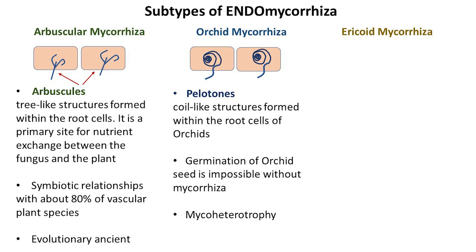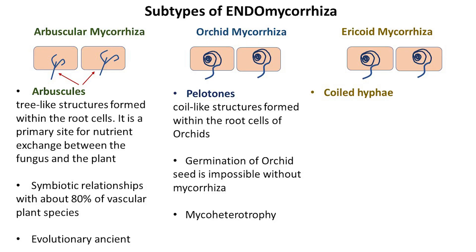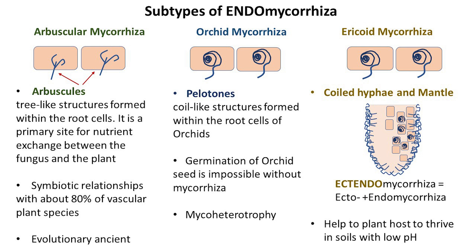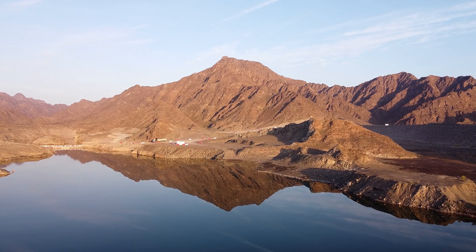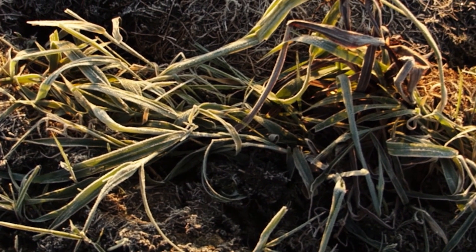As is obvious from the name, ericoid mycorrhiza is an association between mycorrhizal fungi and ericoid plants. Economically important plants in this family include blueberry, bilberry, cranberry, and rhododendron. Fungal hyphae penetrate root cells of ericoid plants and get a coiled conformation. Additionally, hyphae envelop the plant root forming a mantle, as in the case of ectomycorrhizal interaction. This combination of features of both ecto- and endomycorrhiza is called ectendomycorrhiza. One of the remarkable features of ericoid mycorrhizal fungi is their ability to thrive in acidic soils. Consequently, this association is crucial for plant survival in soils with low pH. These associations are commonly found in environments like heathlands and peat bogs, where nutrient availability is limited. The fungi aid the host plant in nutrient uptake, contributing to the plant's resilience in harsh conditions.